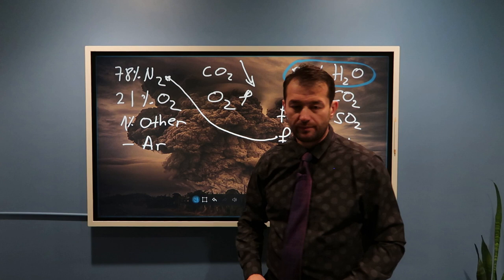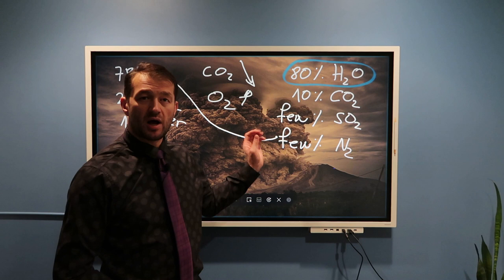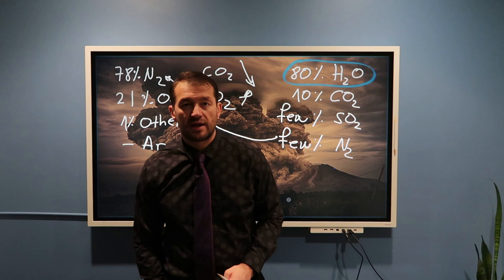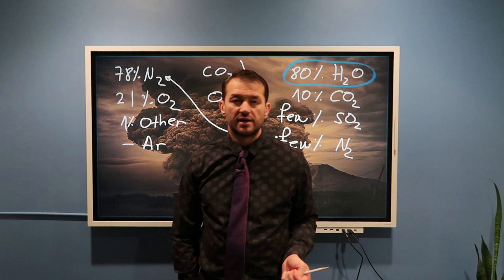Some of you might ask: how did we get argon? You would be right — there is typically no argon in volcanic eruptions. Argon is formed through radioactive decay of potassium-40 in our crust, similar to other noble gases in the atmosphere such as krypton and neon.